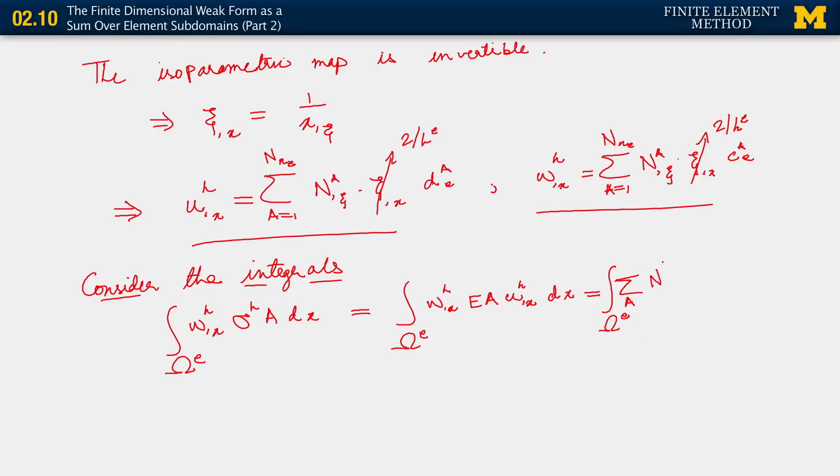We know now from having looked at it over the past couple of segments, that a runs over the limits one to number of nodes in the element, which in the simplest of cases is two. So, I have that, I just won't write the upper and lower limits. I'll just say that's the sum over a, okay. N_a,ξ times 2 over h_e. C_a^e, I'm going to put parentheses here. I have EA, open parentheses. And here I have another sum, but I need to be careful here and use a different index for the sum. So I will use the index b, and not the index a.